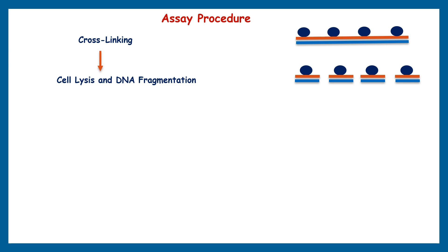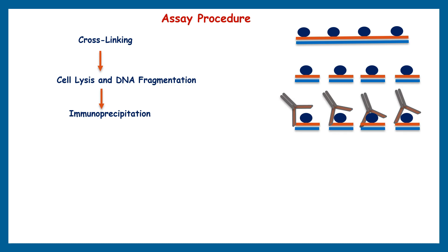By using restriction enzymes or mechanical forces, the chromatin is fragmented into smaller pieces. The third step is immunoprecipitation: a specific antibody targeting the protein of interest is used to pull down the protein-DNA complexes. This antibody binds to the target protein, and the resulting antibody-protein-DNA complexes are isolated from the rest of the cellular components.